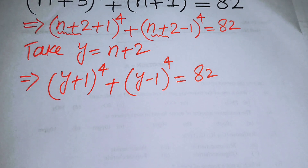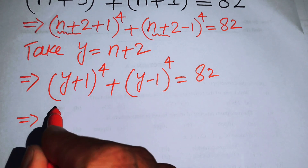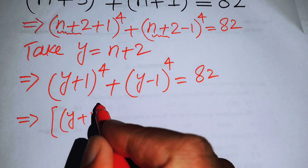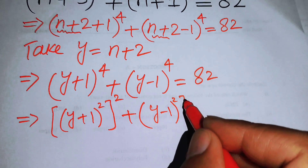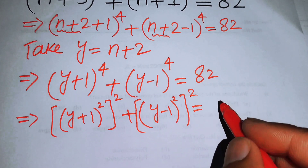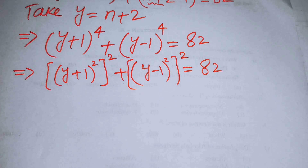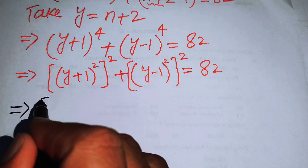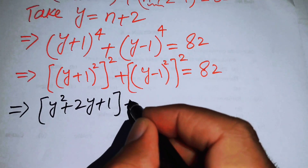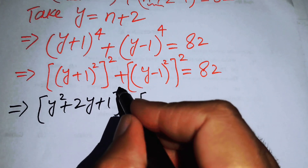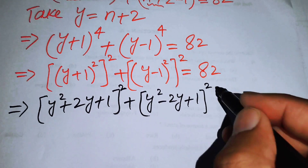Now we have a fourth-order equation. We can simplify by writing it as [(y+1)²]² + [(y−1)²]² = 82, then applying the square formula to expand: (y²+2y+1)² + (y²−2y+1)² = 82.